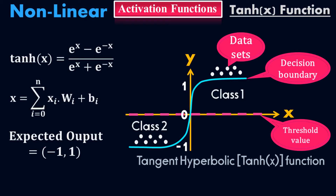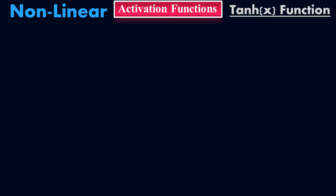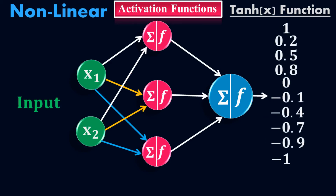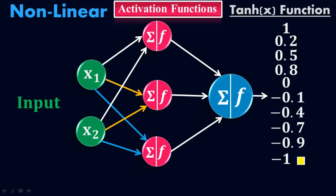Let me show you the diagram of the neural network where we're going to use the tangent hyperbolic function. This is a simple neural network — I pass input here and the output will be between negative 1 and positive 1. These are the inputs, this is the hidden layer, and this is the output. We have used the tangent hyperbolic function in the hidden layer and also in the output. When you pass the input, you can get any value between negative 1 and positive 1.